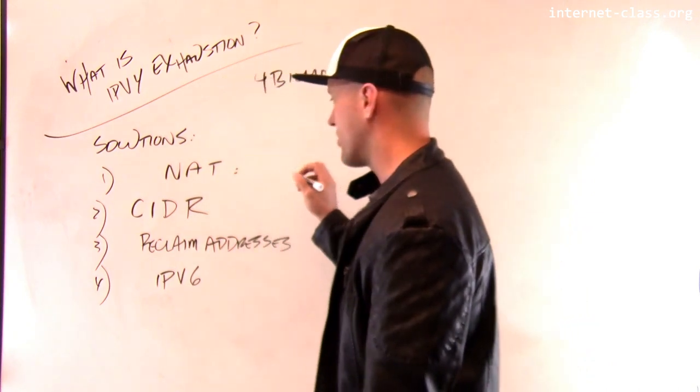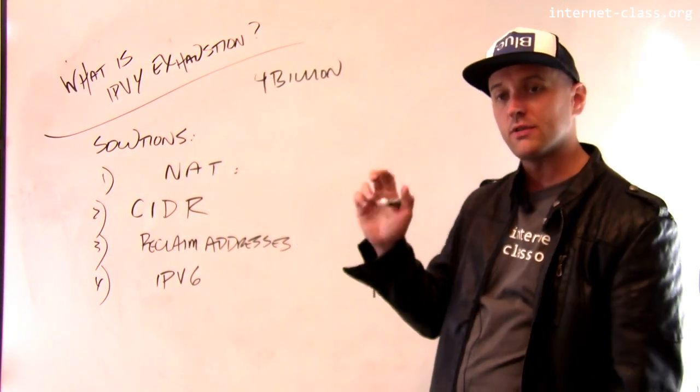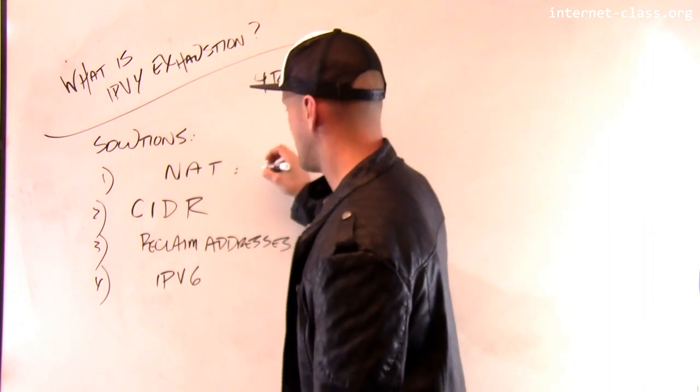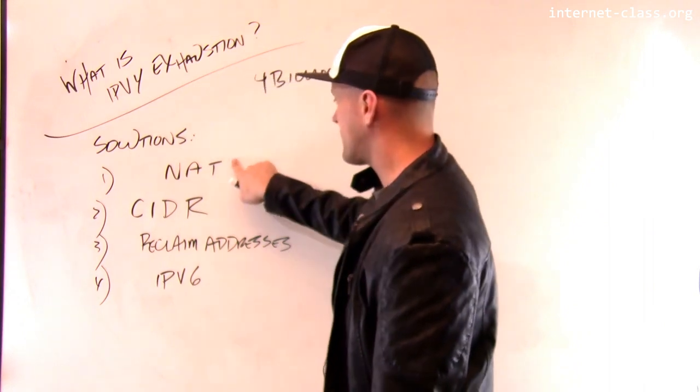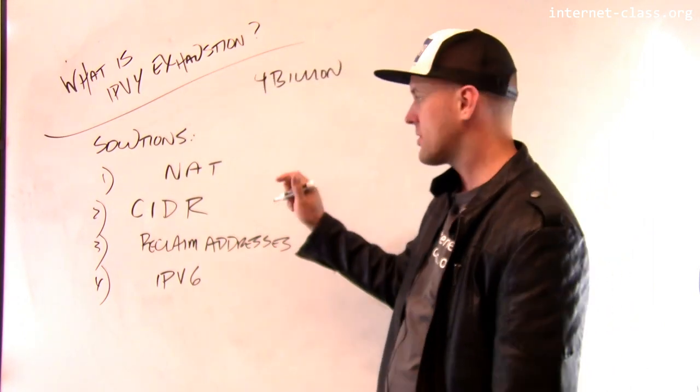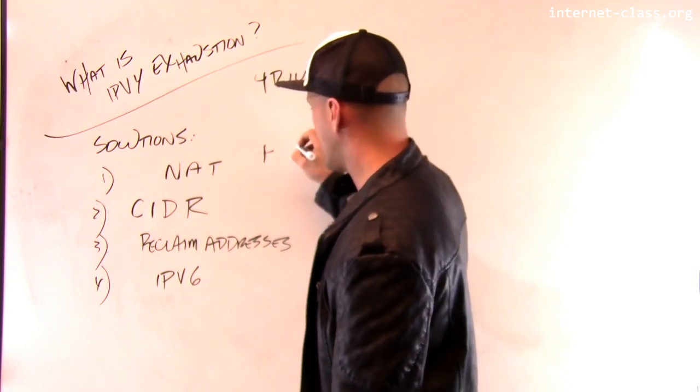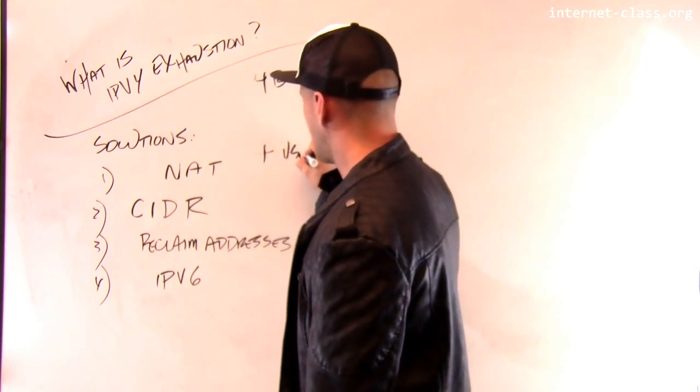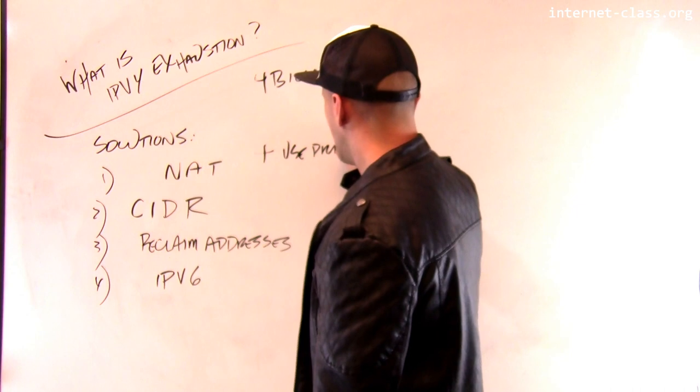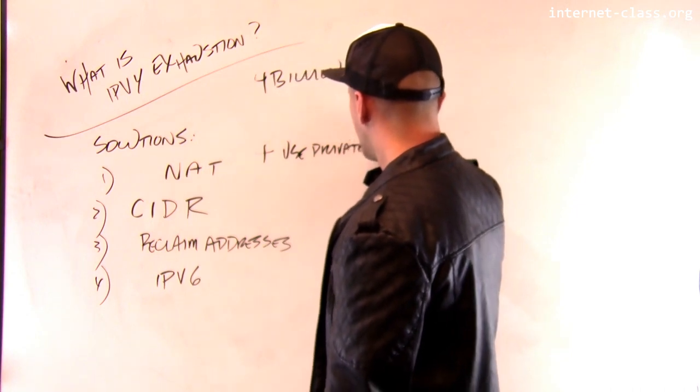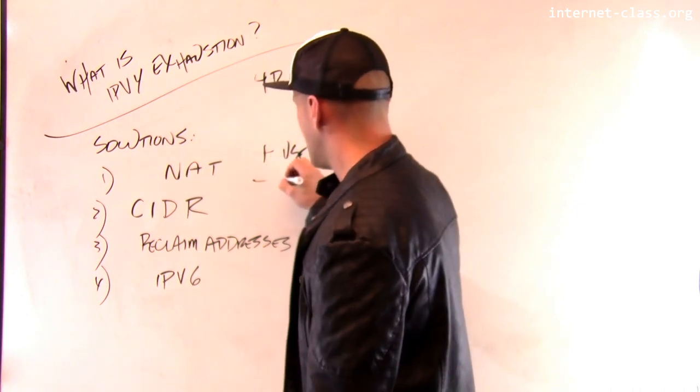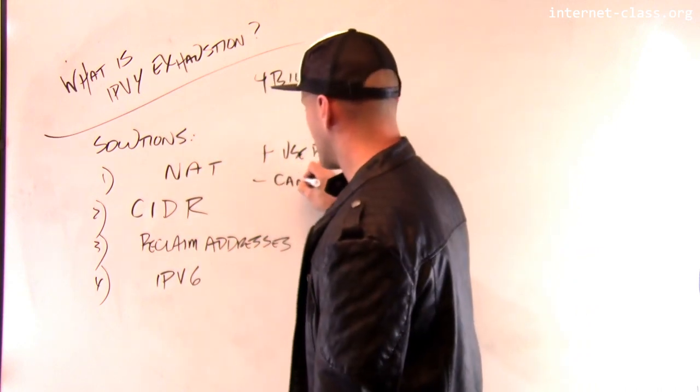So there are things that we're sort of rolling out and things that are in use. So network address translation, which we talked about before, that allows computers to use private IP addresses. And each one of these solutions has pros and cons to it. So network address translation, the pro is that it allows us to use private addresses.